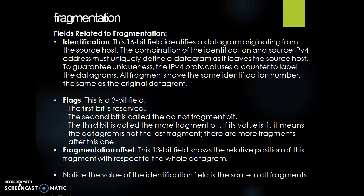First is identification. This 16-bit field identifies the datagram originating from the source. The combination of the identification and source IPv4 address must uniquely define a datagram as it leaves the source host. To guarantee uniqueness, the IPv4 protocol uses a counter to label the datagrams. All fragments have the same identification number, the same as the original datagram.